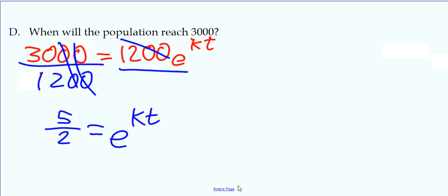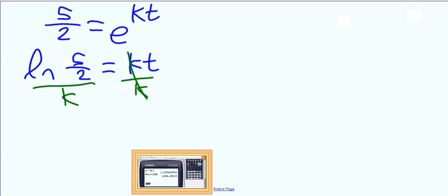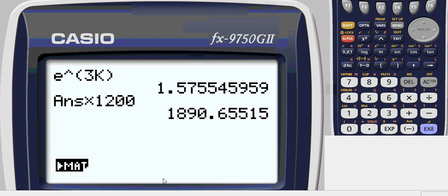So now since e, we're trying to get the variable down from e, so we're going to log it. Change it to a natural log of 5 over 2. And then divide by k to get t by itself, so we know how long. So in our calculator, we'll do natural log of 5 over 2, divided by k.